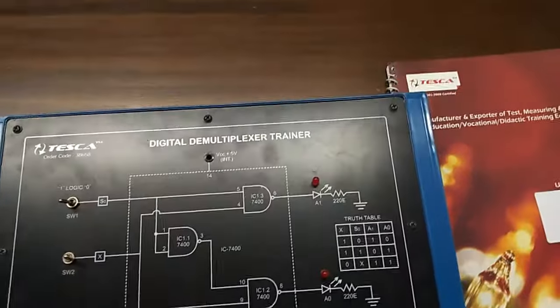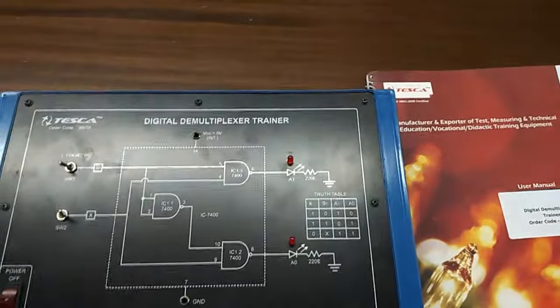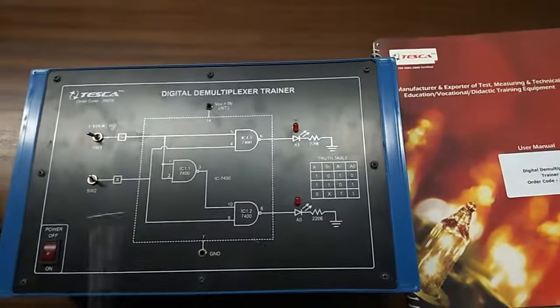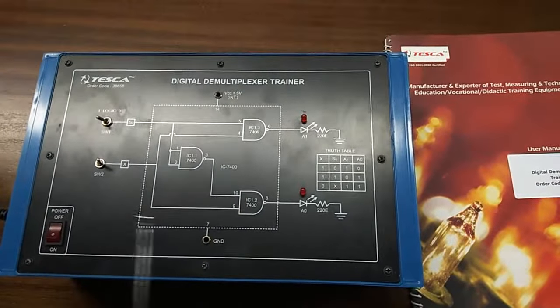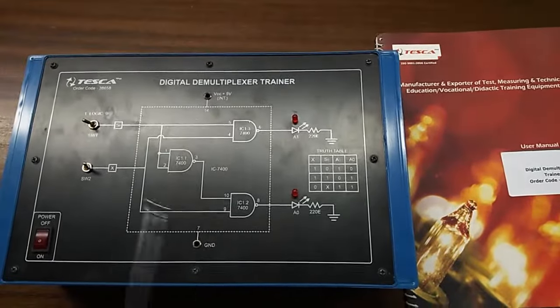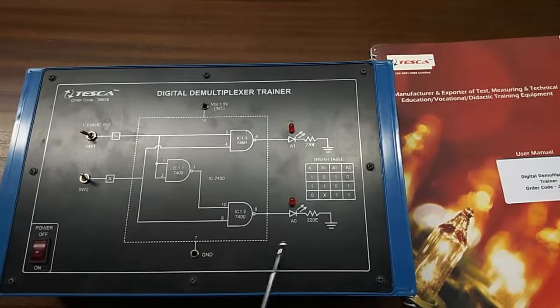Today we are going to show you our digital demultiplexer trainer kit, order code 38658. This is the trainer kit. This is the demultiplexer circuit mimic diagram given on the trainer kit.